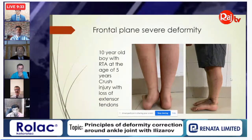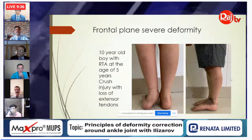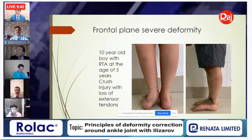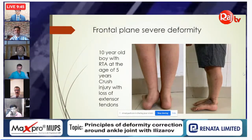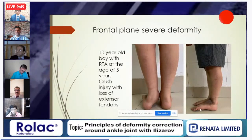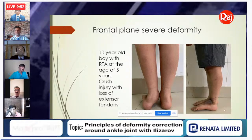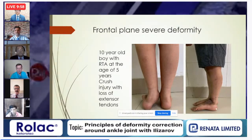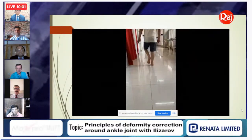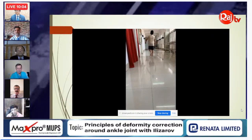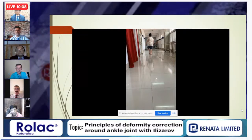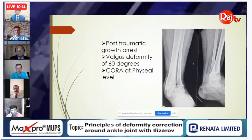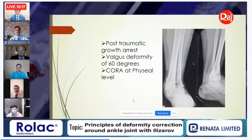Moving to a severe frontal plane deformity: a 10-year-old boy with a road traffic accident at age five had a crush injury with loss of extensor tendons — resulting not only in deformity but also absence of dorsiflexor tendon function, causing foot drop, plus a large scar area on the ankle joint — all contributing to abnormal gait with a lot of stress on the ankle.